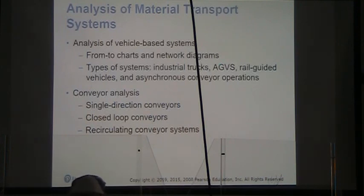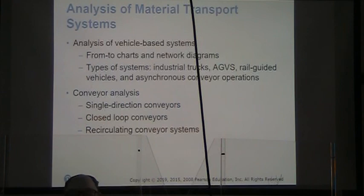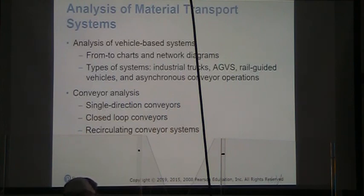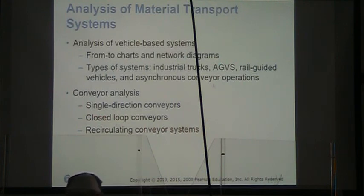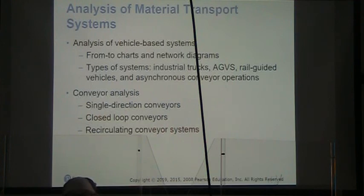To analyze material transport systems, we create from-to charts and network diagrams to identify where the largest amounts of material are moving, guiding decisions on what type of equipment to use. Options include industrial trucks, AGVs, rail guided vehicles, or asynchronous conveyor systems. For conveyor analysis, we consider single direction conveyors, closed loop conveyors, or recirculating conveyor systems.